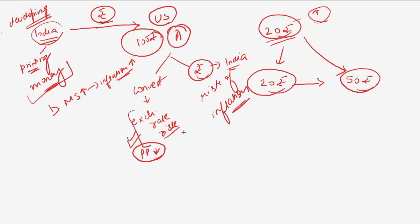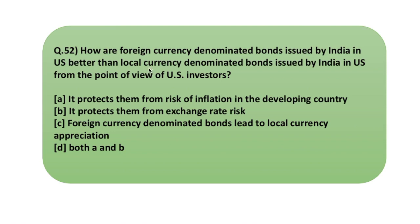These are the risks when India issues local currency denominated bonds in the US. For your additional information, these bonds are also known as masala bonds — any bonds issued by an Indian company in another country denominated in INR. Foreign currency denominated bonds in USD protect US investors from both the risk of inflation in the developing country and the exchange rate risk. So our answer is both A and B.